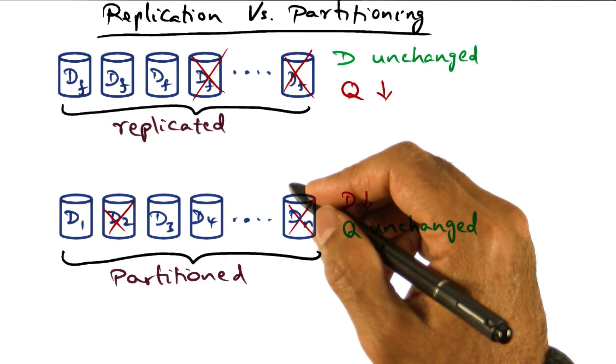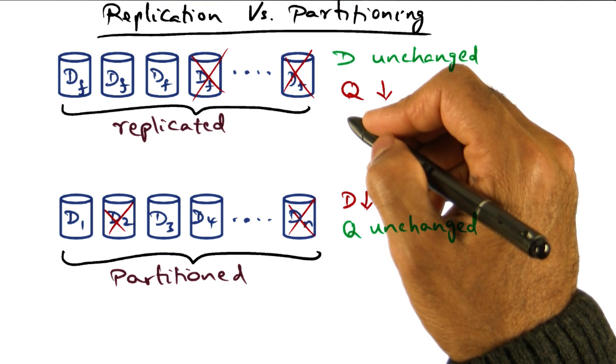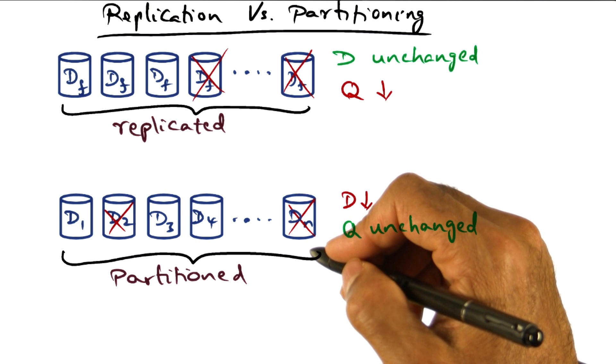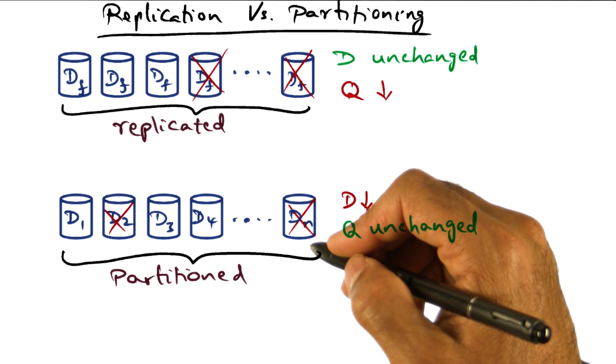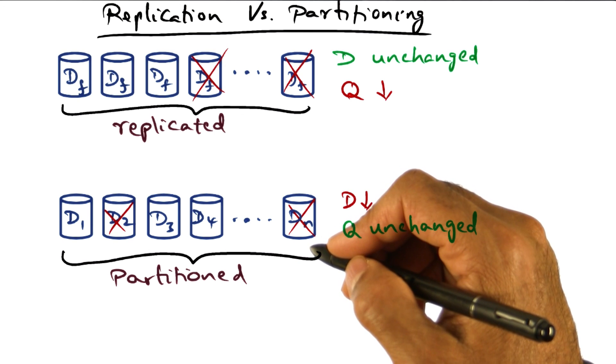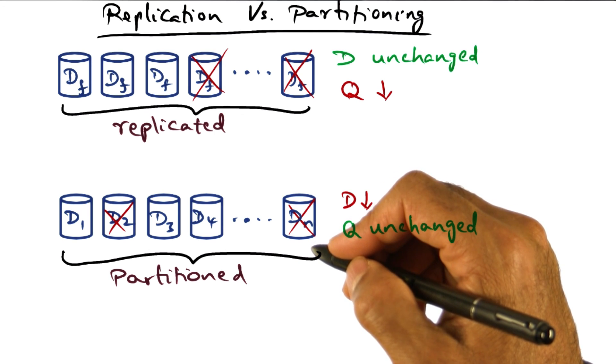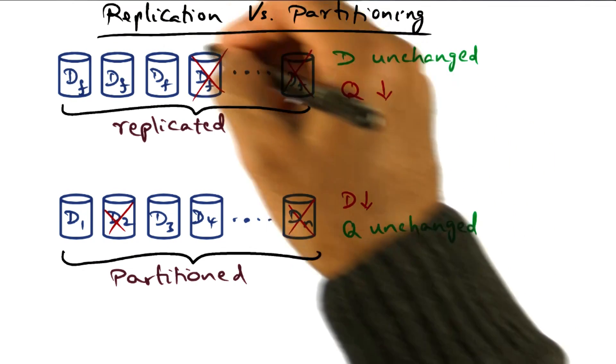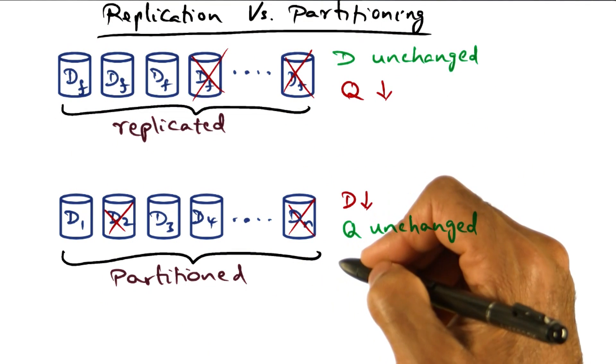The only exception is if the queries result in significant write traffic to the disk. This is rare in giant scale services, but if that happens, then replication may require more DQ than partitioning. But as a first order of approximation, so long as we assume that giant scale services are serving client requests which are network bound, the DQ is independent of the strategy used by the system administrator for managing the data, whether it is replication or partitioning.